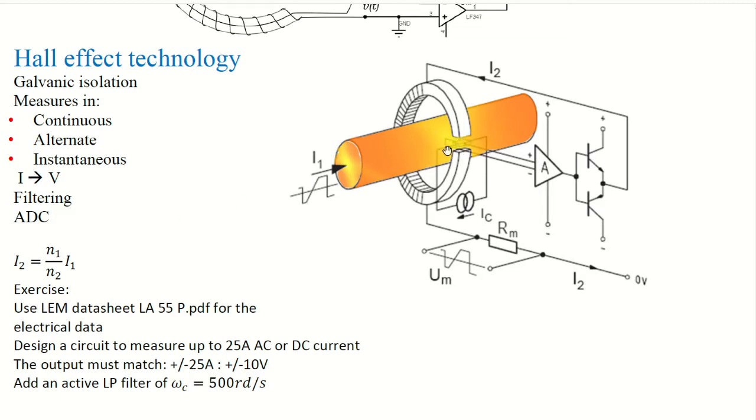So if there is an induction here, it will produce a voltage. And this voltage is proportional to this current and to this induction, which is a flux density. Then it will be amplified and it will be re-injected here in the I2.